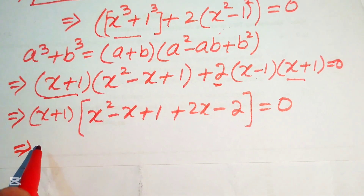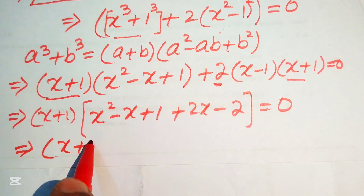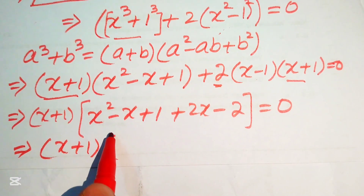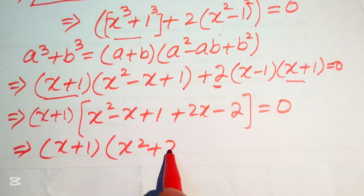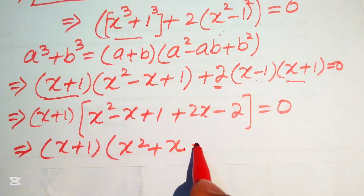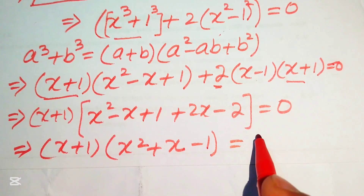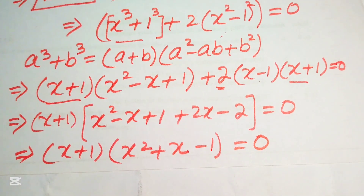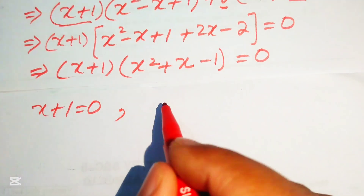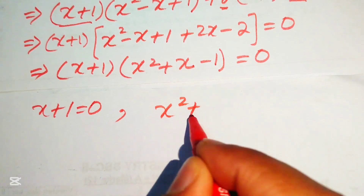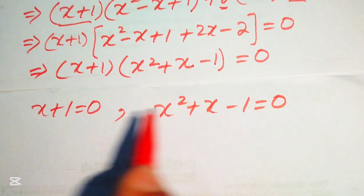Simplifying inside the bracket: -x + 2x = x and 1 - 2 = -1, so we get (x + 1)(x² + x - 1) = 0. We split into two cases: x + 1 = 0 and x² + x - 1 = 0.